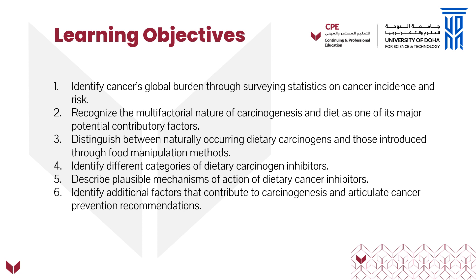We're going to distinguish between naturally occurring dietary carcinogens and those introduced through food manipulation methods such as preparation and preservation, and how these can lead to carcinogenesis, can increase cancer risk — some of the mechanisms by which this is done. And we're going to identify the different categories of dietary carcinogen inhibitors, so how carcinogenesis can be manipulated at different stages and hopefully stopped or delayed.